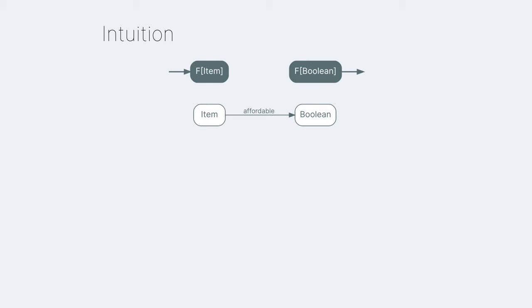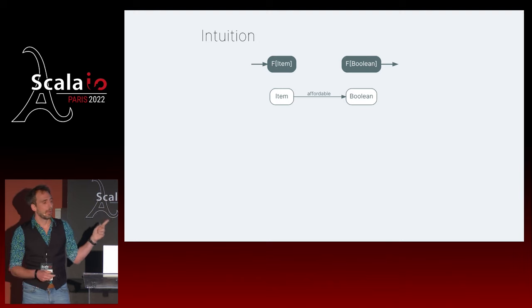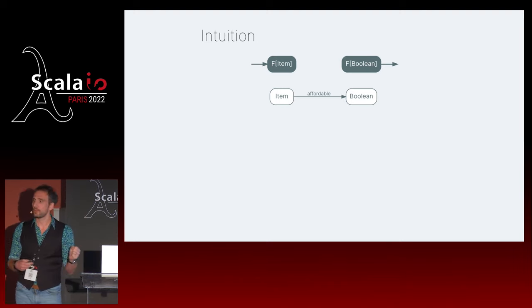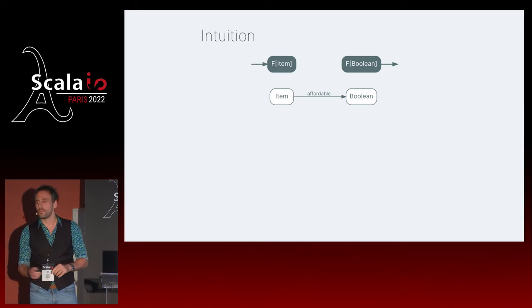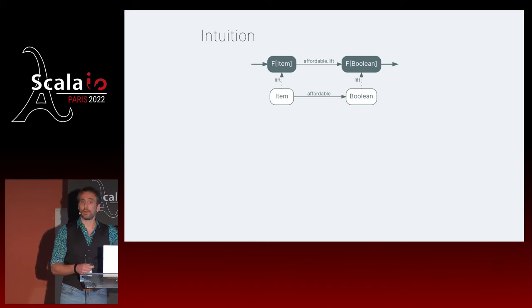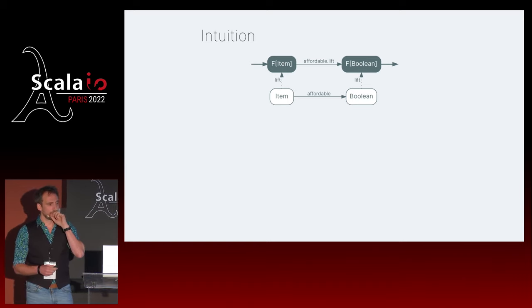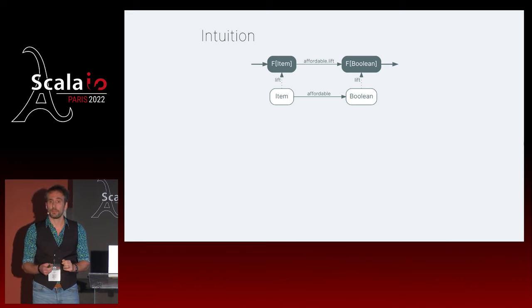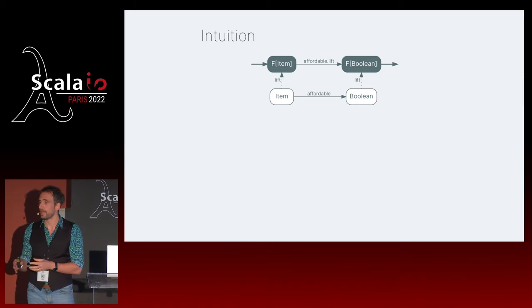We're kind of stuck. And when stuck, something that works quite well is to draw. Our input is an F of item, and our desired output is an F of boolean. The only tool we have to go from one to the other is the function affordable. Clearly there's no path from one to the other. But what we wish we could do is take that affordable function and somehow move it up - lift it - so that we get affordable.lift, which goes from our input to our desired output. We could pretend that somebody else has solved the problem and use that result - make it somebody else's problem.